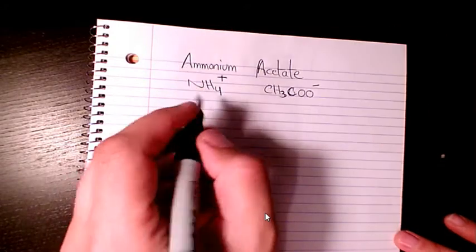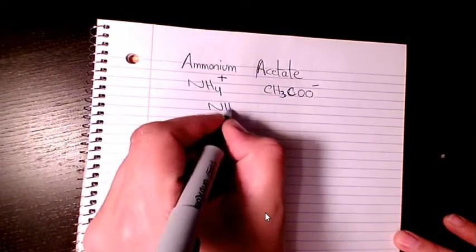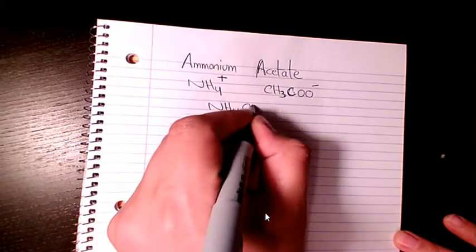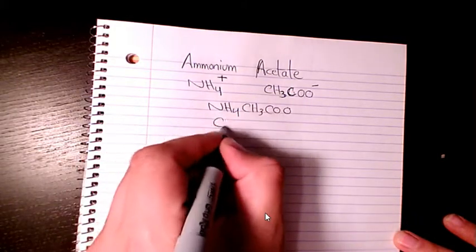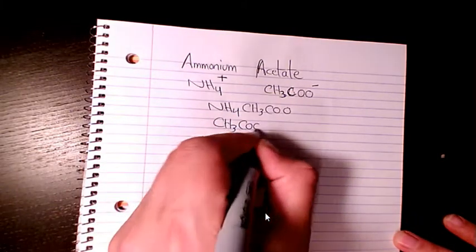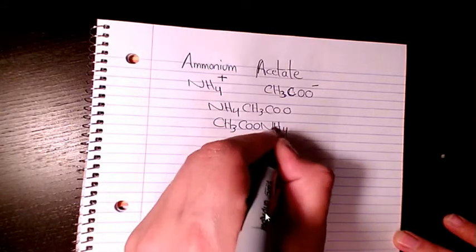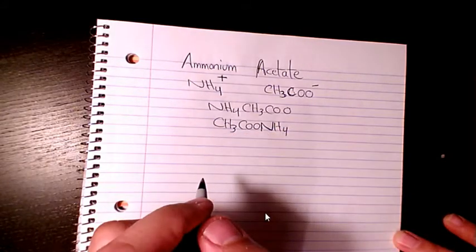So when you want to write ammonium acetate, it's going to be NH4CH3COO, or it's going to be CH3COONH4. You can write it like that as well. That's the